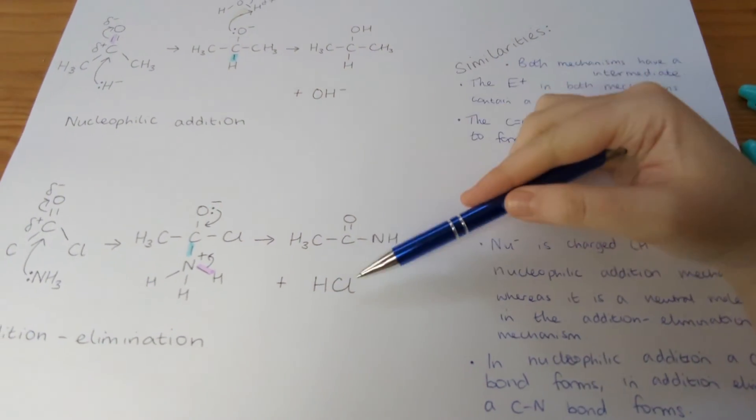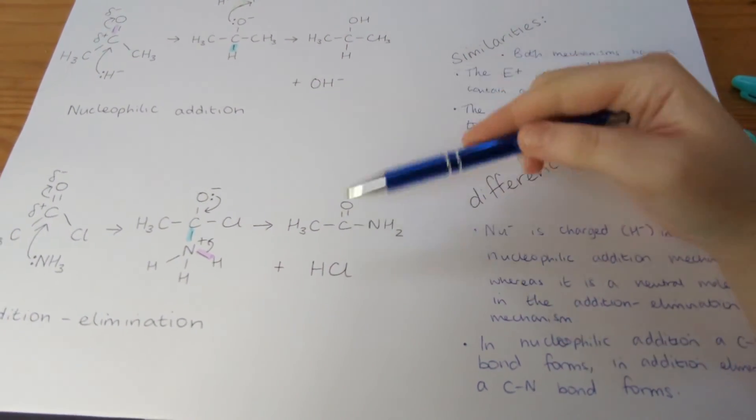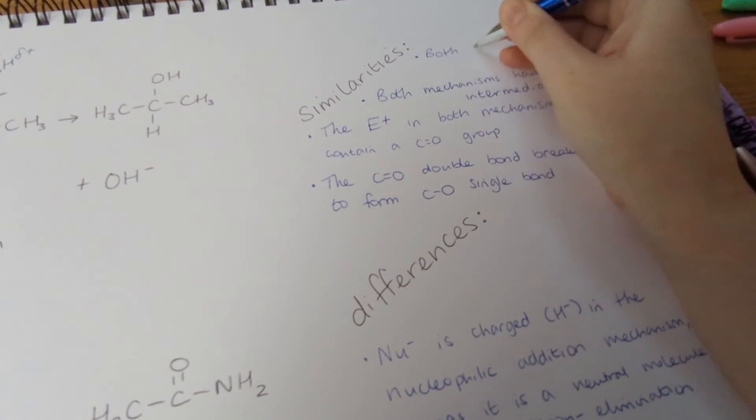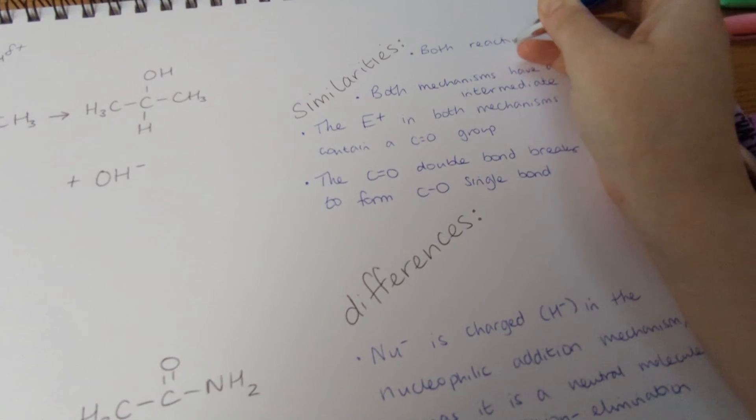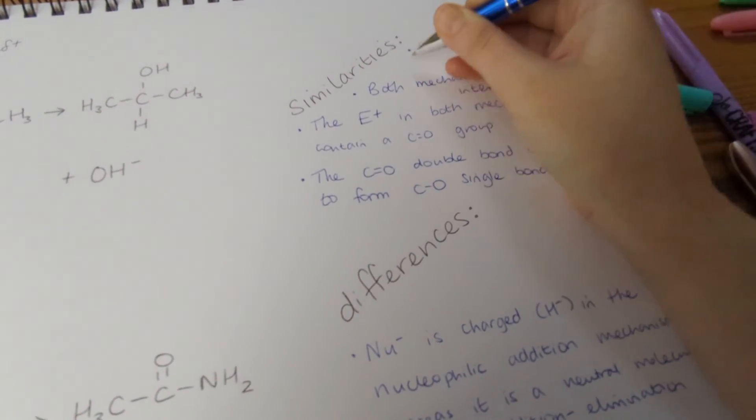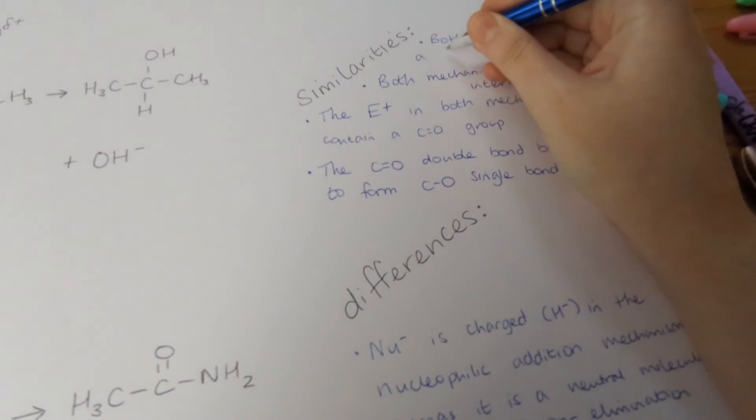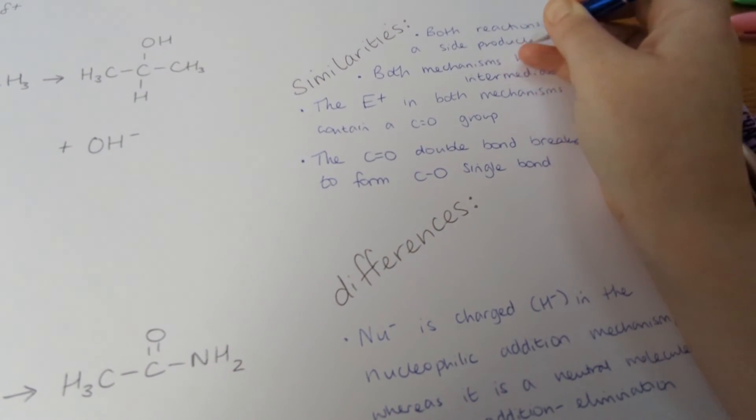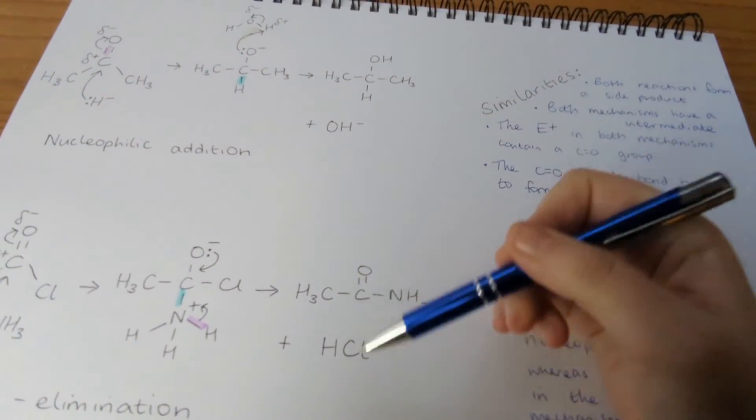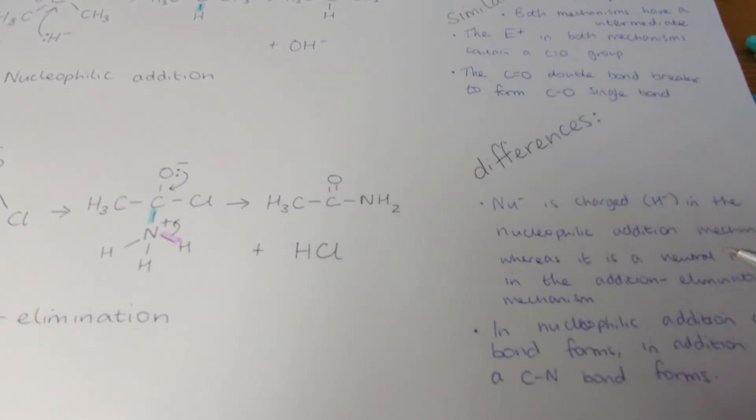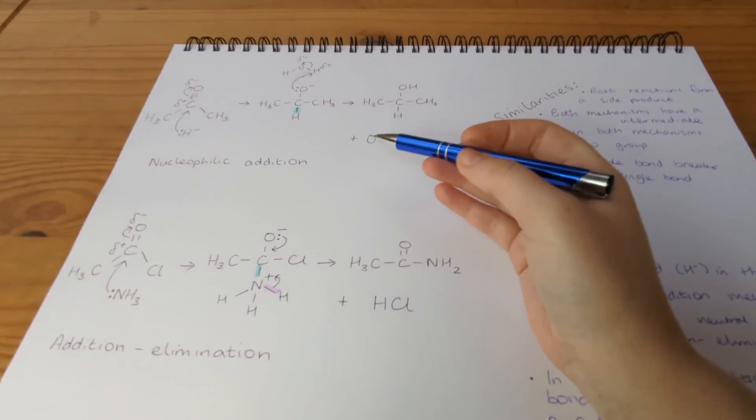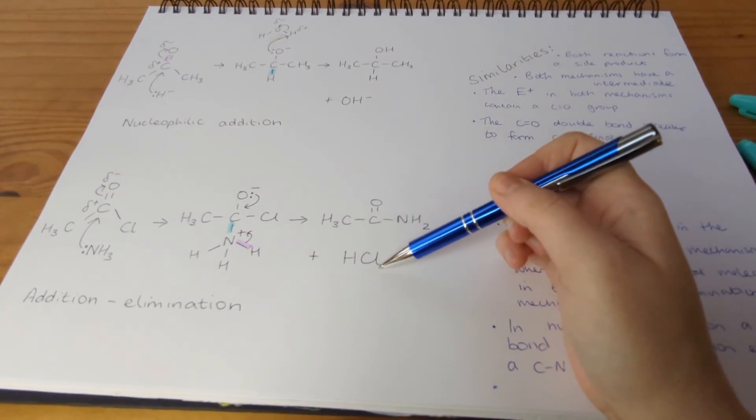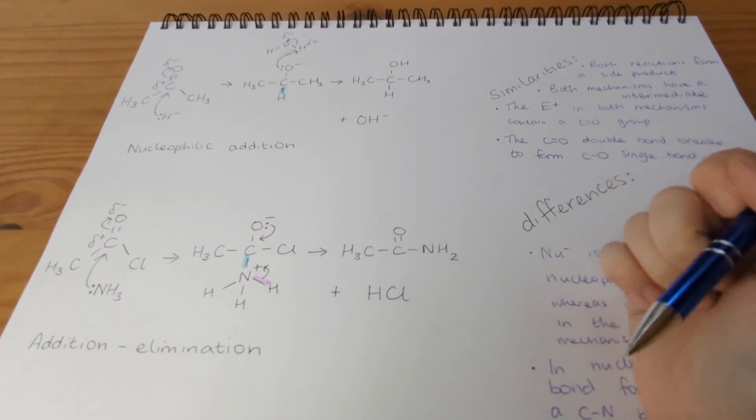And lastly, let's look at the side products. So both reactions form a side product. Or we can call it a by-product. The same thing. Whereas the difference is, what exactly is that side product. So in this reaction, it's OH-. Whereas in this one, it's a molecule. Hydrogen chloride. Or hydrochloric acid.